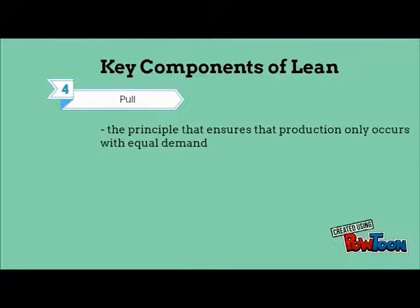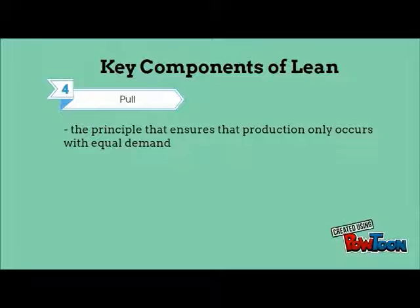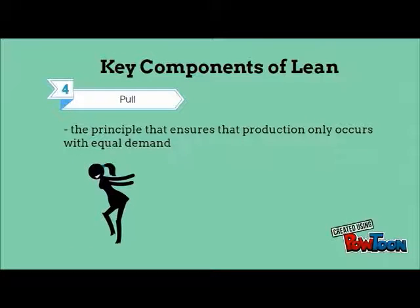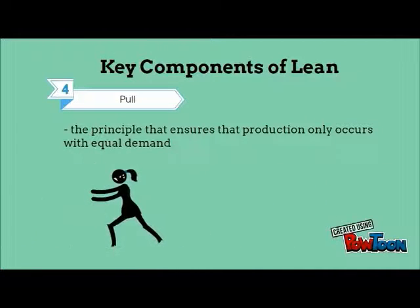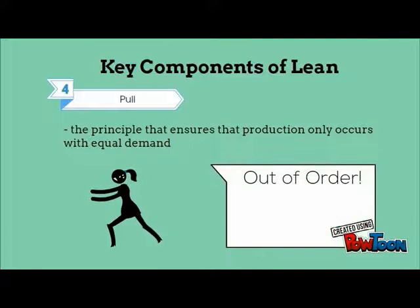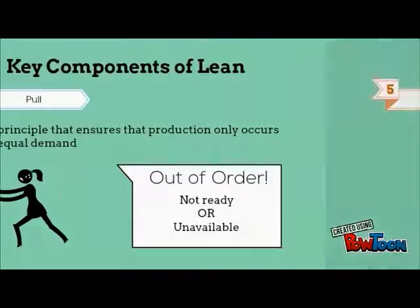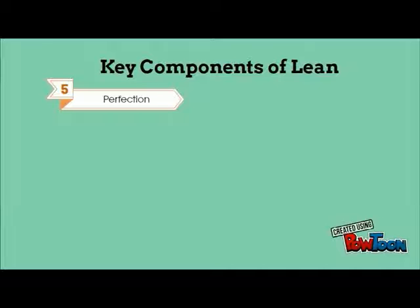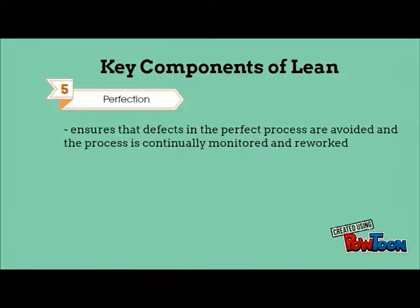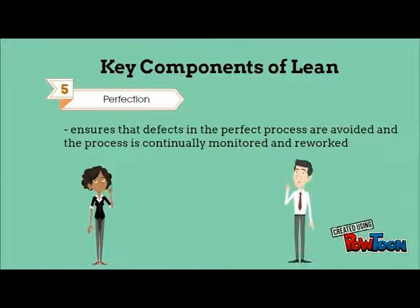Pull is a principle that ensures that production only occurs with equal demand. The perfect process involves pull, not push. Push occurs when steps in the process are performed out of order due to a step in the process not being ready or unavailable. Lastly, perfection is a key principle that ensures that defects in the perfect process are avoided and the process is continually monitored and reworked.